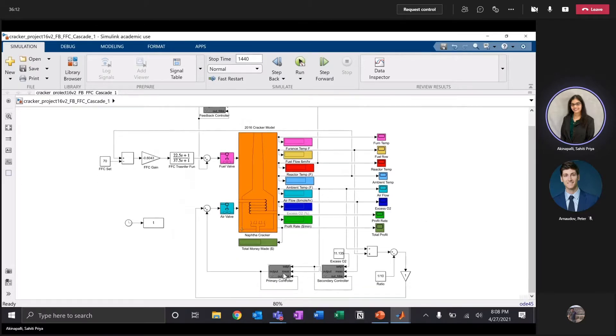Further down, there is a cascade control loop which controls the air valve based on the excess O2 and air flow, followed by a ratio control which also adjusts the air valve based on the flow of fuel and flow of air.